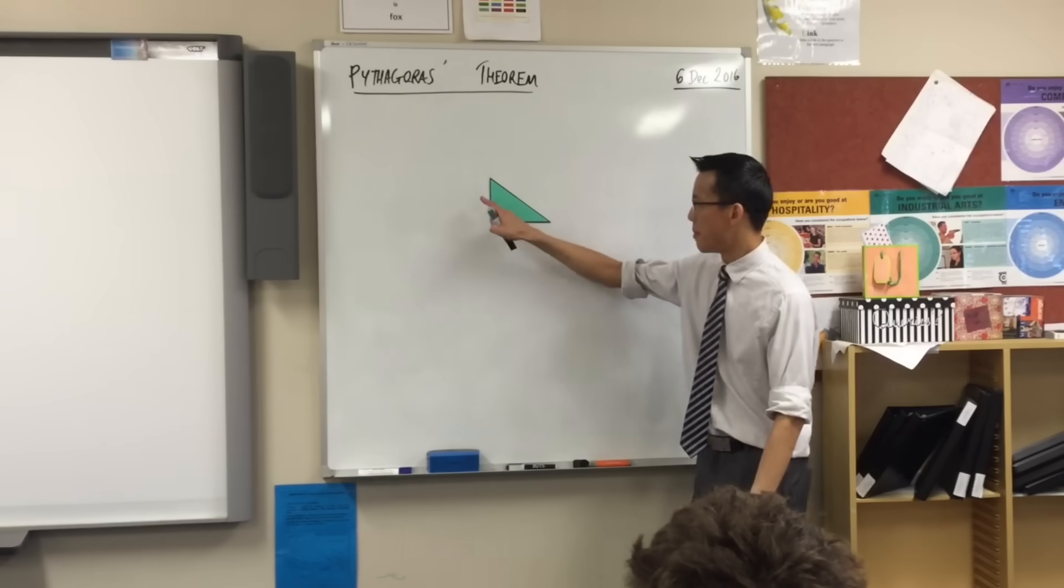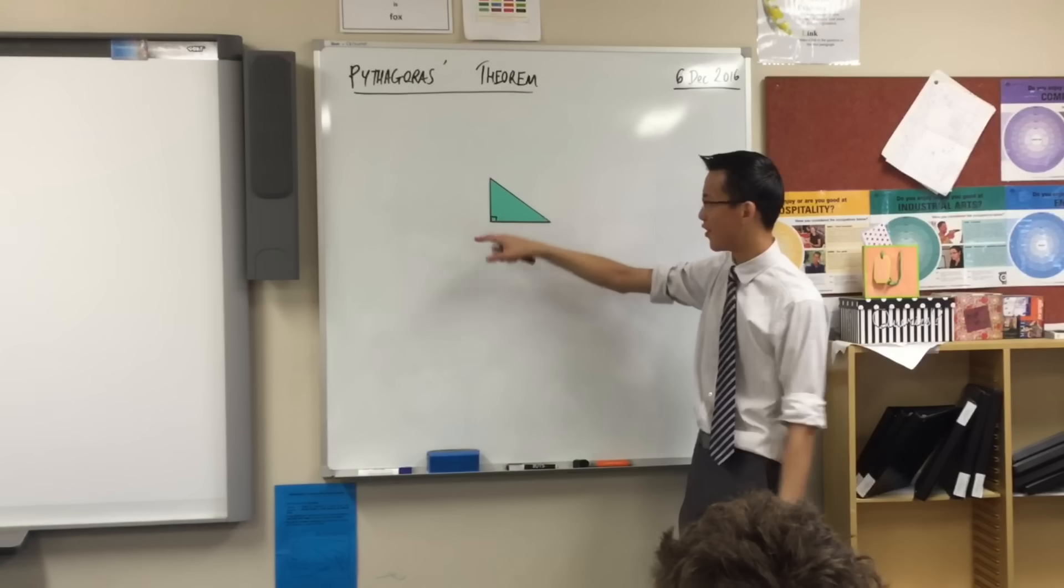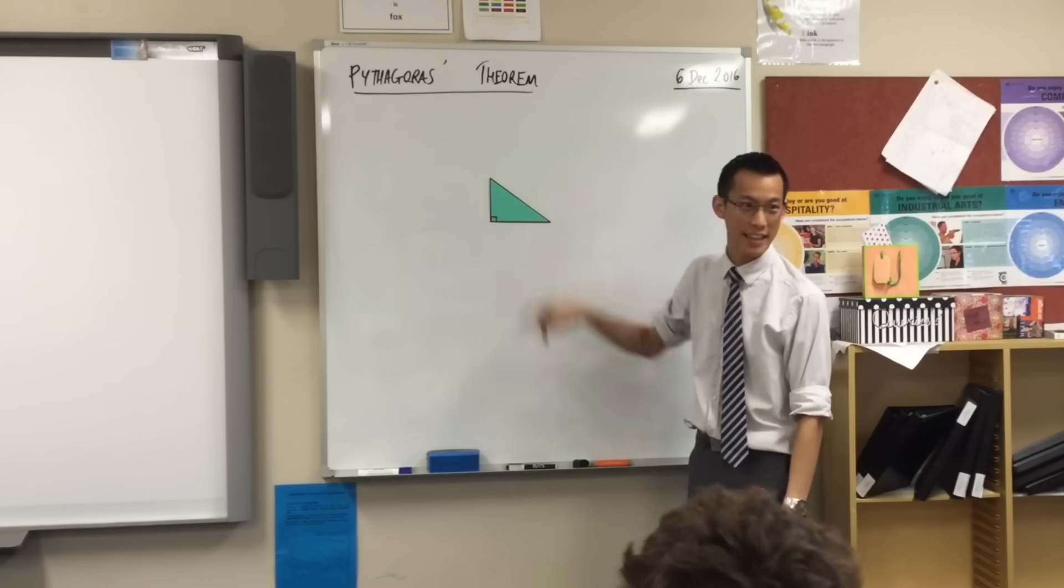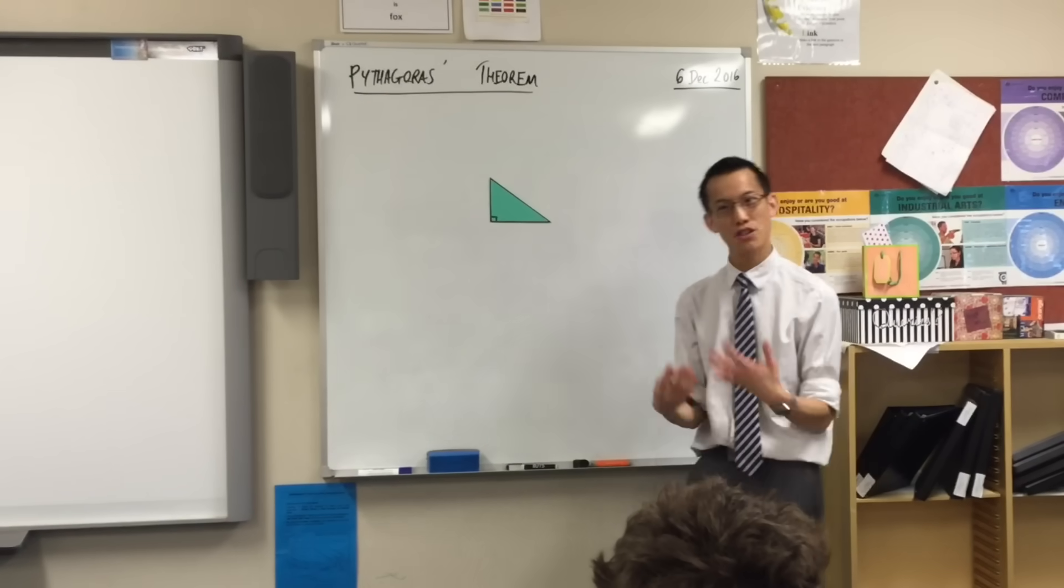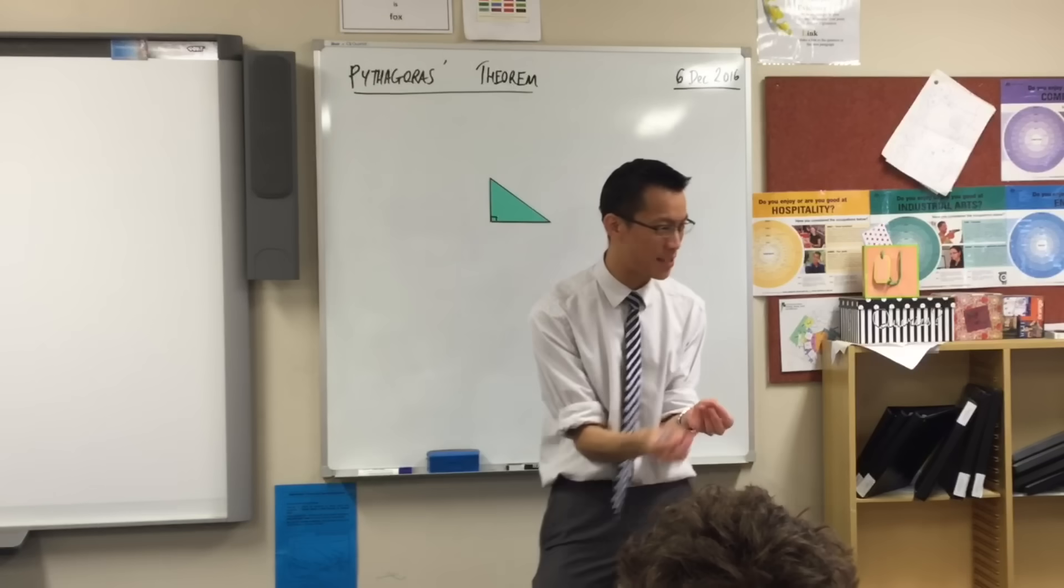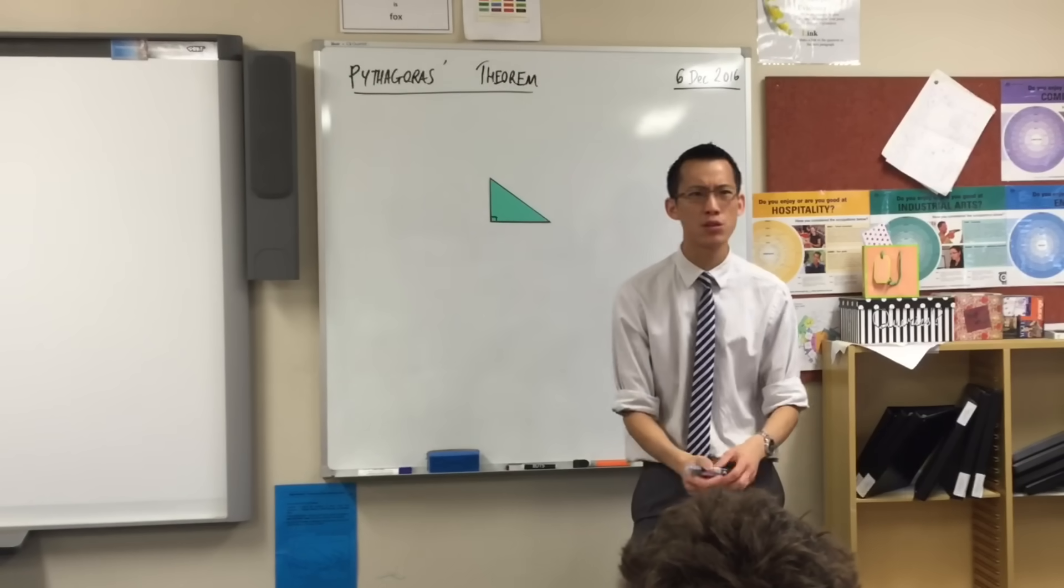So here's what I'm going to do. This theorem, this property, this result relates these three sides together. So I'm just going to give them some names. Do you remember in algebra we gave numbers names when we didn't know what they were? What was the point of doing that? Why is that useful?